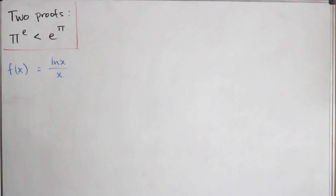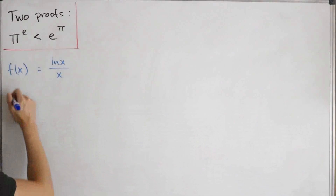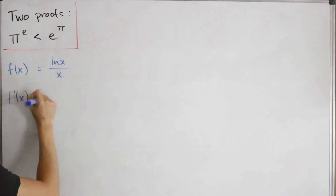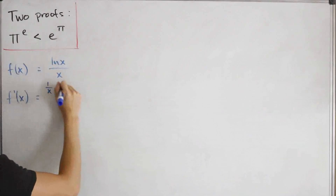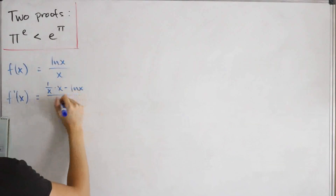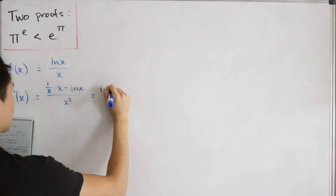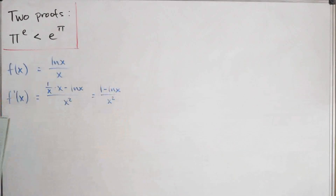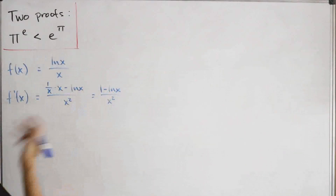To understand the graph without a calculator, we need to find where f(x) is increasing and decreasing by taking the first derivative. Applying the quotient rule, we get: the derivative of ln(x) times x, minus ln(x) times the derivative of x (which is 1), all divided by x squared. Simplifying, this gives us f'(x) = (1 - ln x) / x².